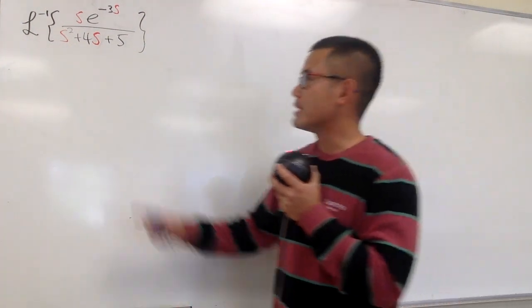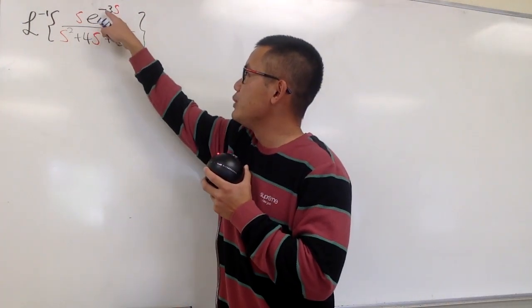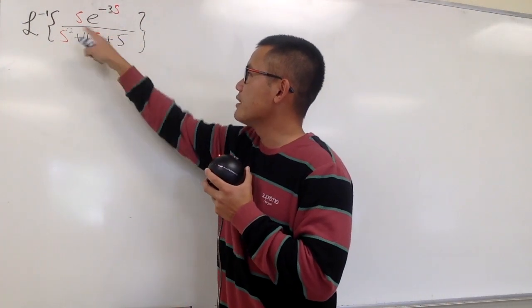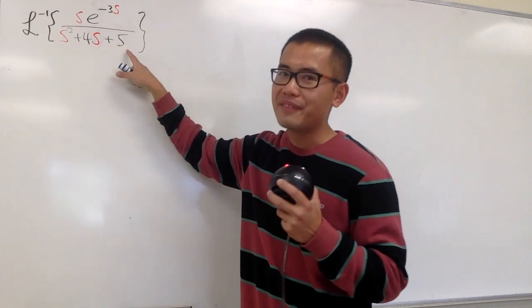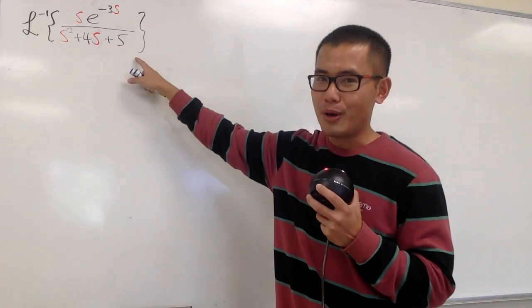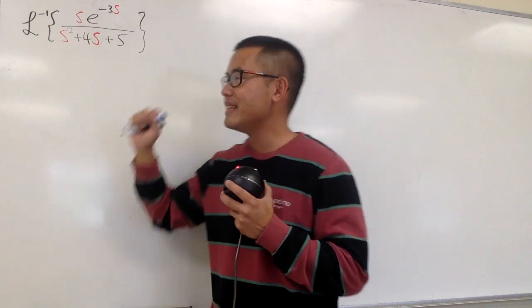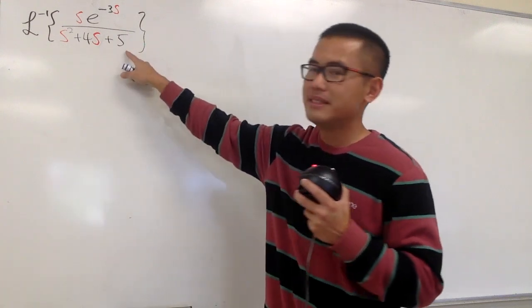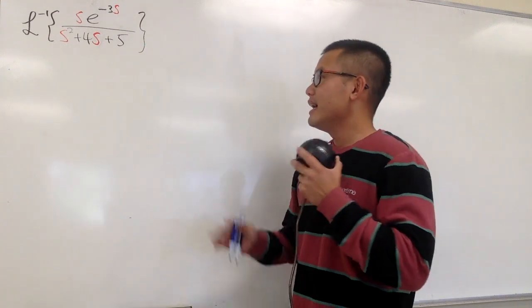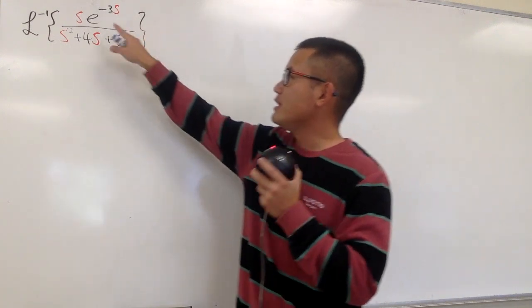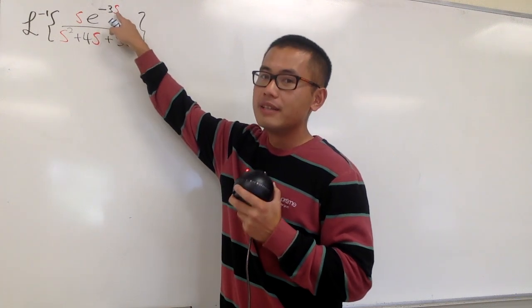We're going to figure out the inverse Laplace of this: s times e to the negative 3s, over s squared plus 4s plus 5. All the s are in red and the 5 is in black. As we see, here we have e to the negative 3s.